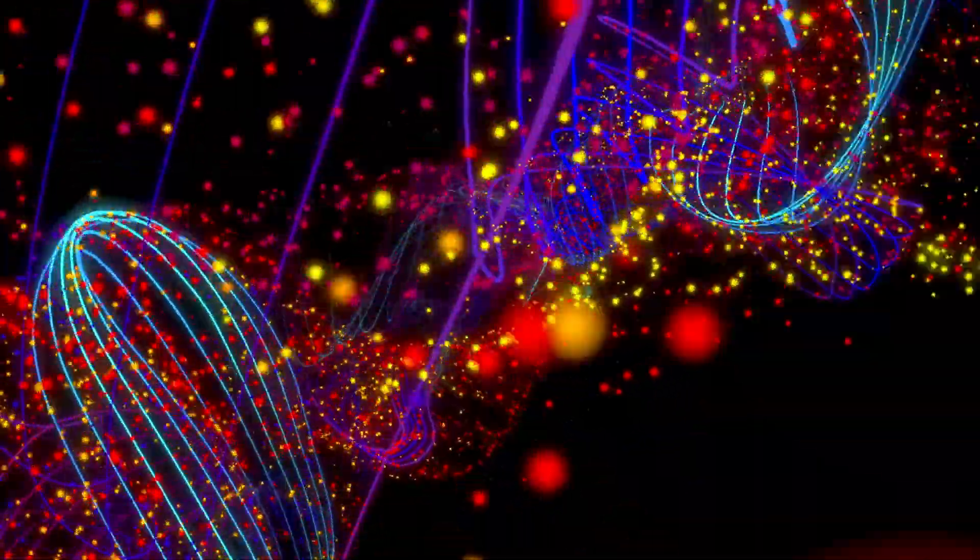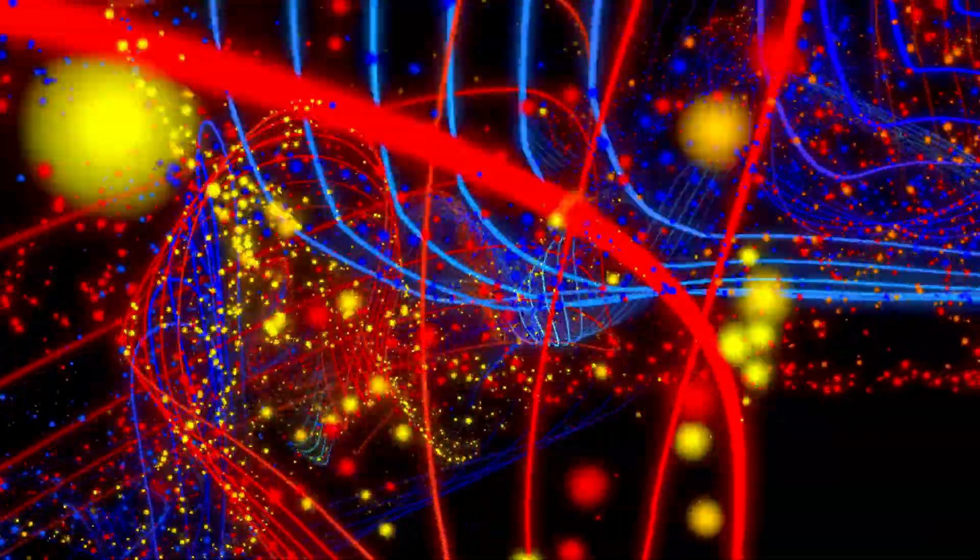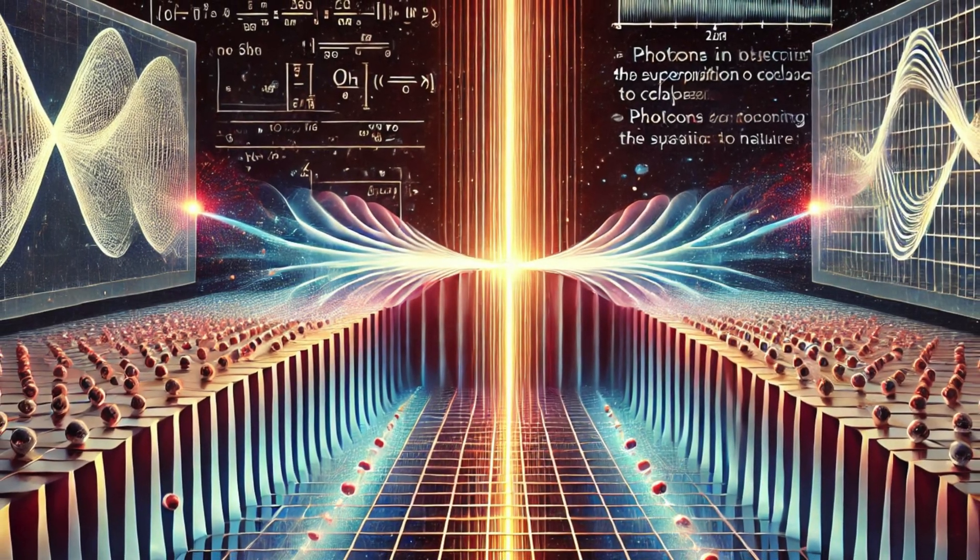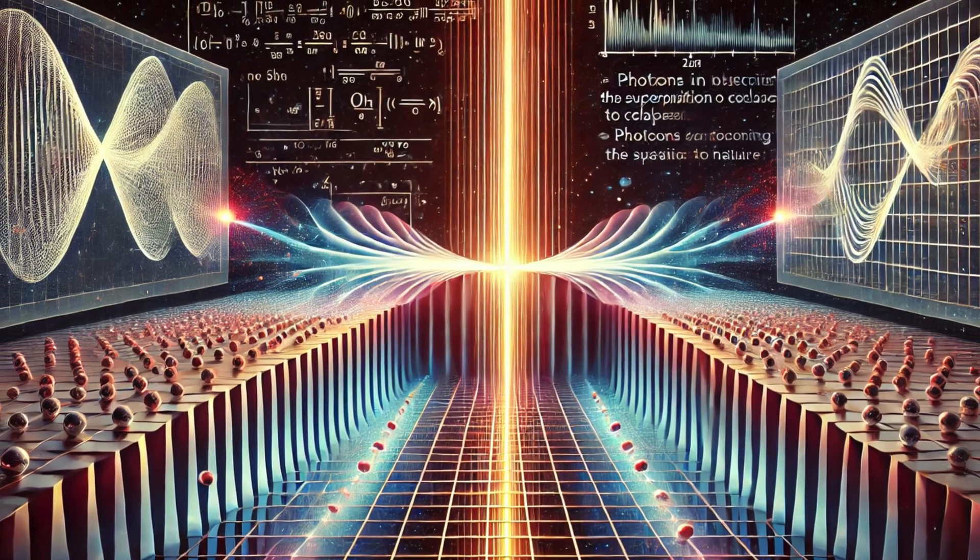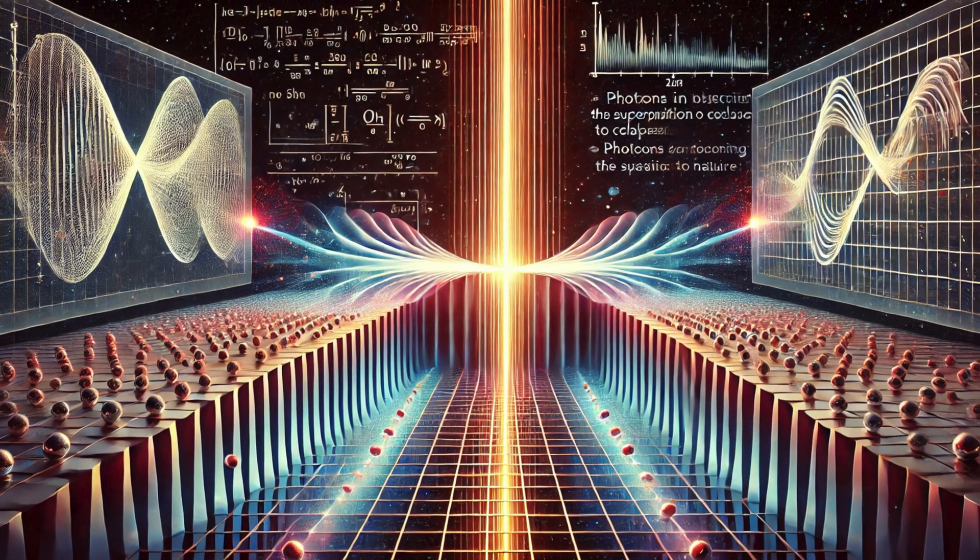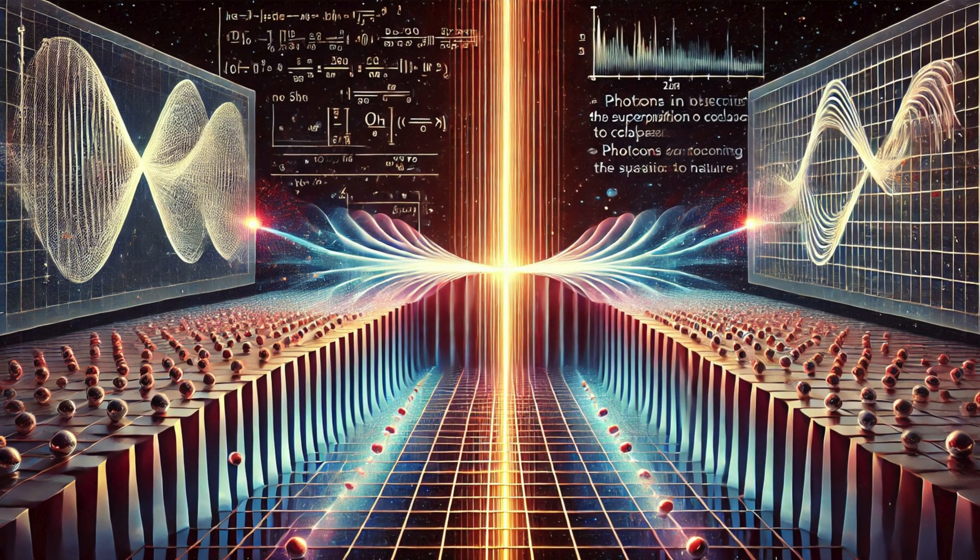To understand this better, we must look at the behavior of quantum particles. Consider the double-slit experiment. When photons are fired at a double-slit, they exhibit wave-like behavior, forming an interference pattern on the screen.